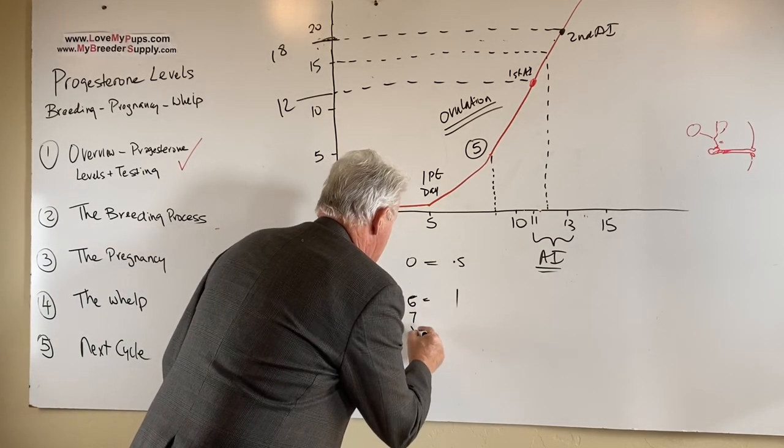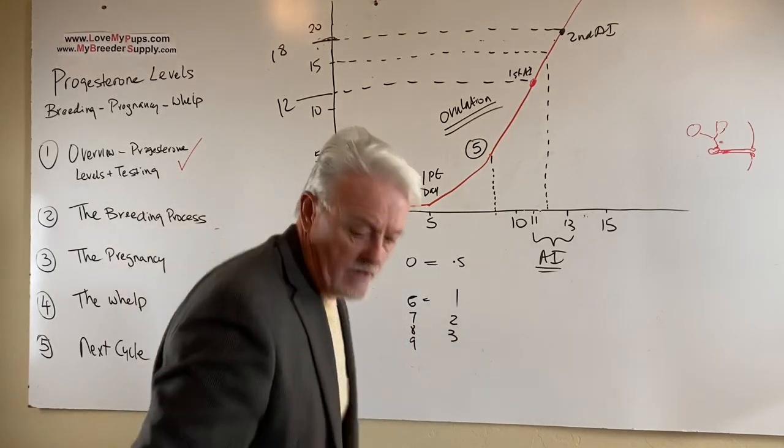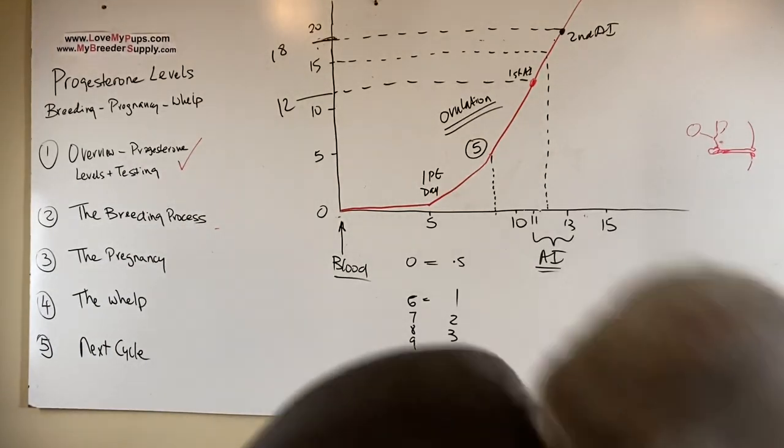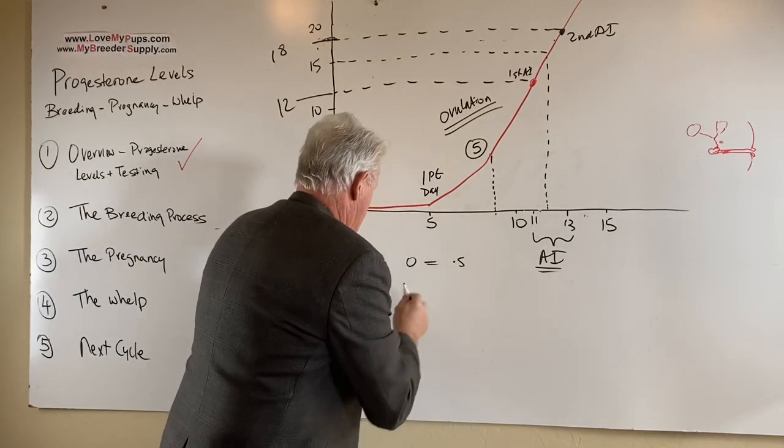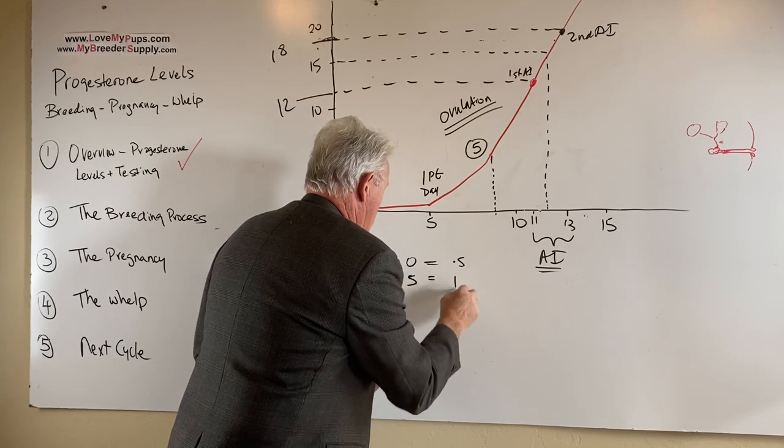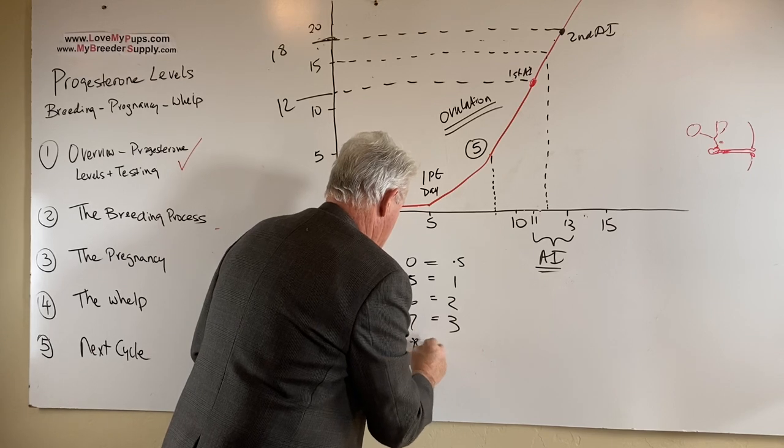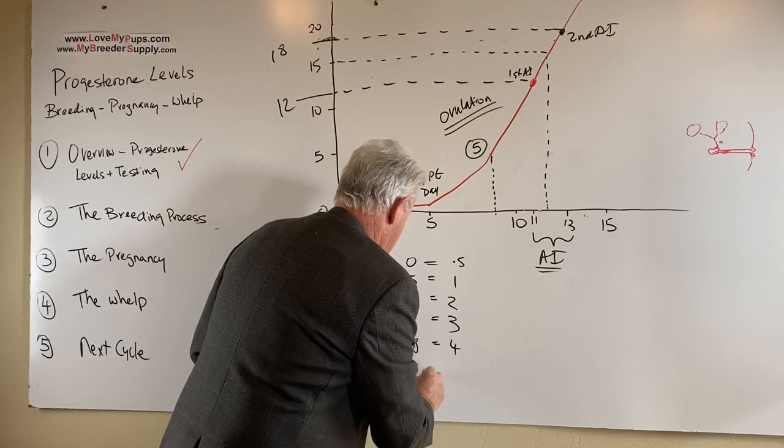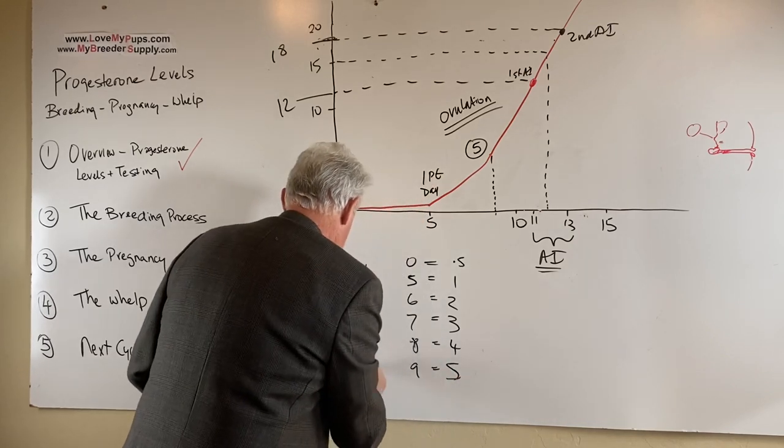Then you expect the level to go up about one point a day. So here's day seven, day eight, day nine, two, three. Actually, I should have made that day five. I actually got that rather wrong. Sorry, let's just readjust this. Day five will be about a one. Six is a two. Seven is a three. Eight is a four. Nine is a five. Ovulation. So there we go. There is what we expect to see.